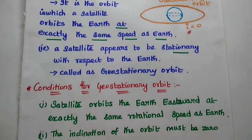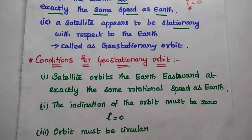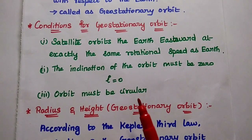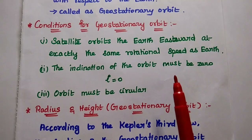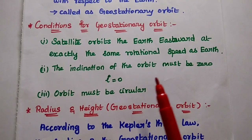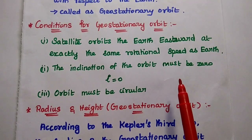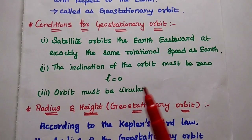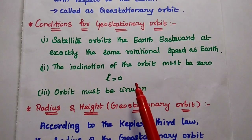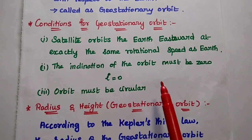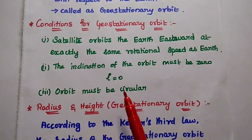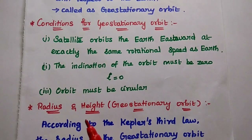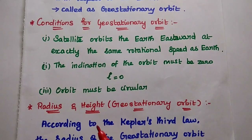There are certain conditions for the geostationary orbit. The first condition is that the satellite orbits the earth eastward at exactly the same rotational speed as the earth, hence it looks stationary. The inclination of the orbit must be 0, that is I equal to 0 degrees. Also, the orbit must be circular.